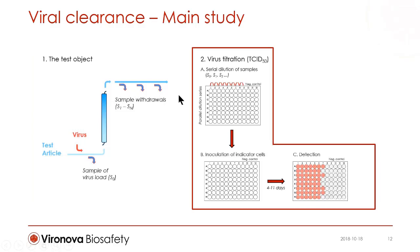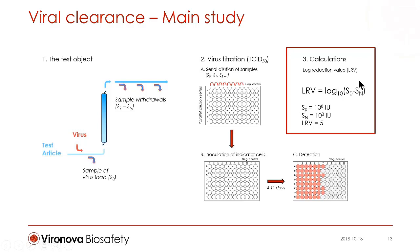To measure the virus concentration, the samples are serially diluted in 96-well plates, each sample in eight parallel series. The dilutions are transferred to another plate containing indicator cells that become visibly ill upon virus infection. The plates are incubated to allow time for the cytopathic effect to develop, and wells with infected cells are scored in a light microscope. Finally, a logarithmic reduction factor is calculated comparing the virus concentration before and after the virus-reducing step. In this example, the spiked test article contains 10 to the 8th infectious virus particles, and the last product sample contains 10 to the 3rd, meaning the step reduced infectious virus particles by 5 logs.